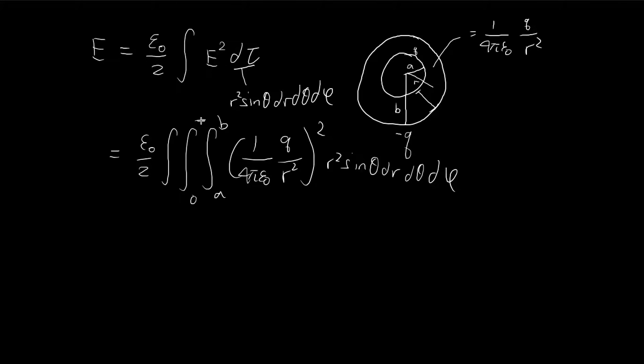Then for theta, 0 to pi. For phi, it's 0 to 2 pi. So that draws out all of the space, essentially.